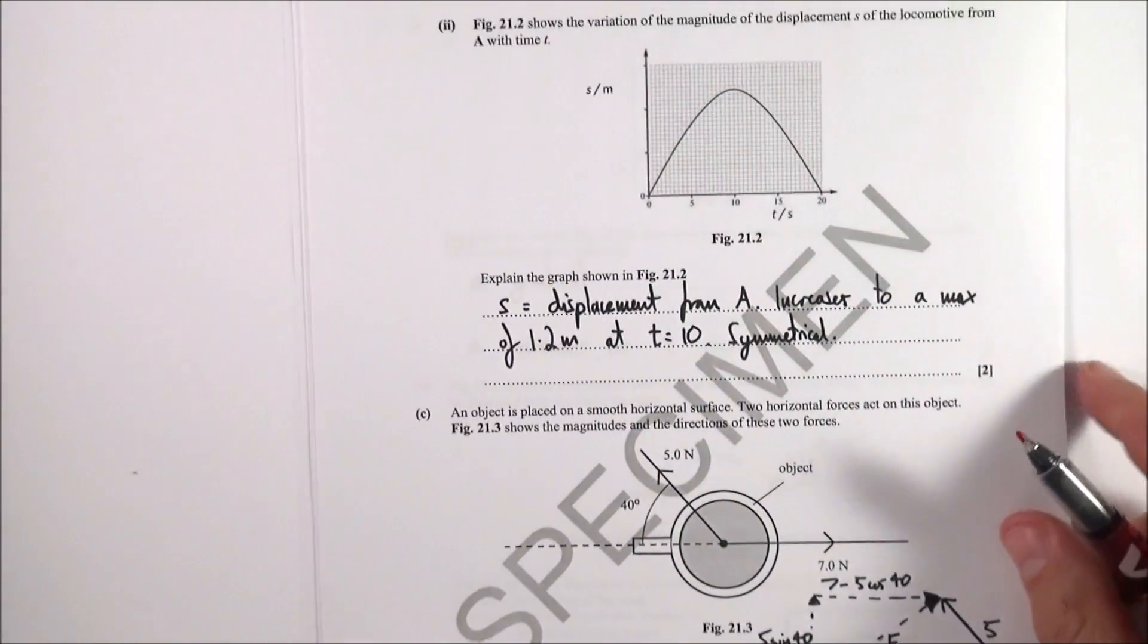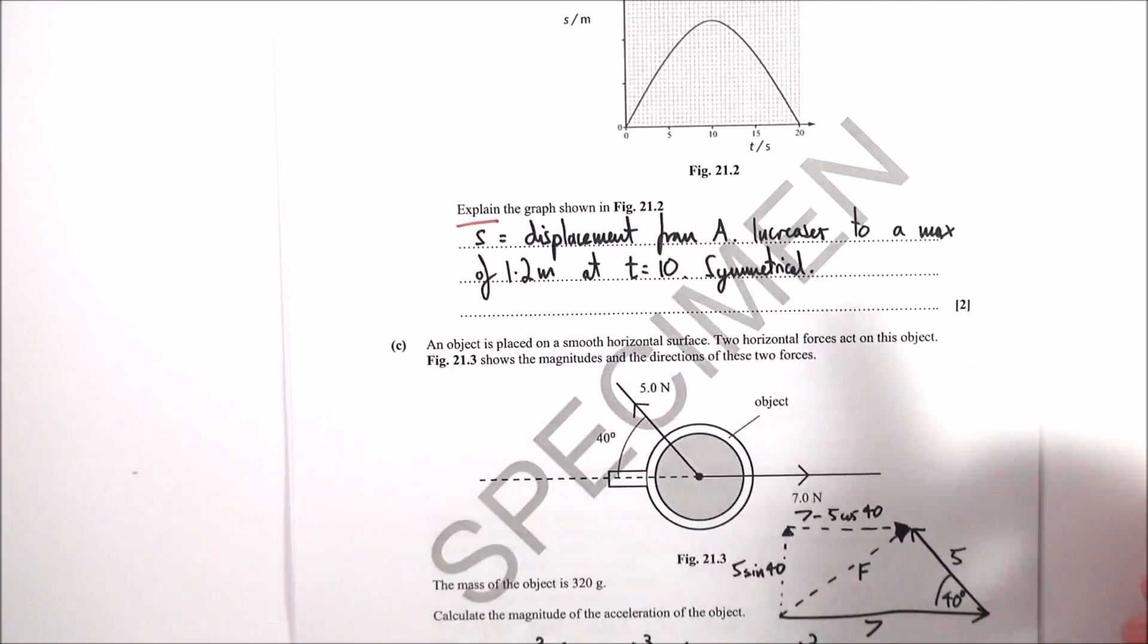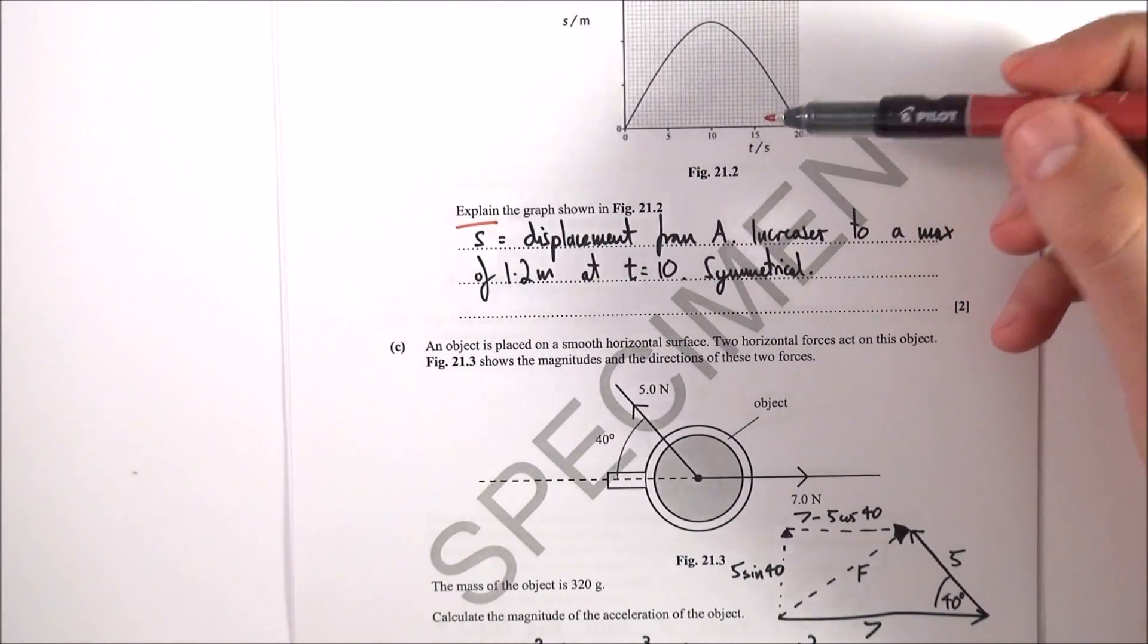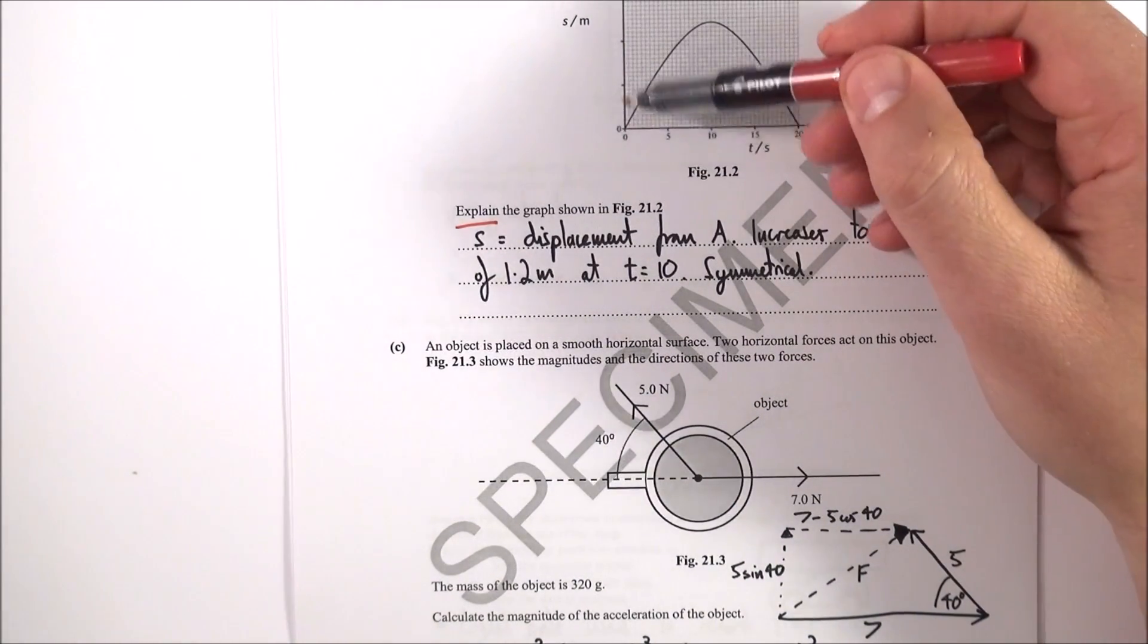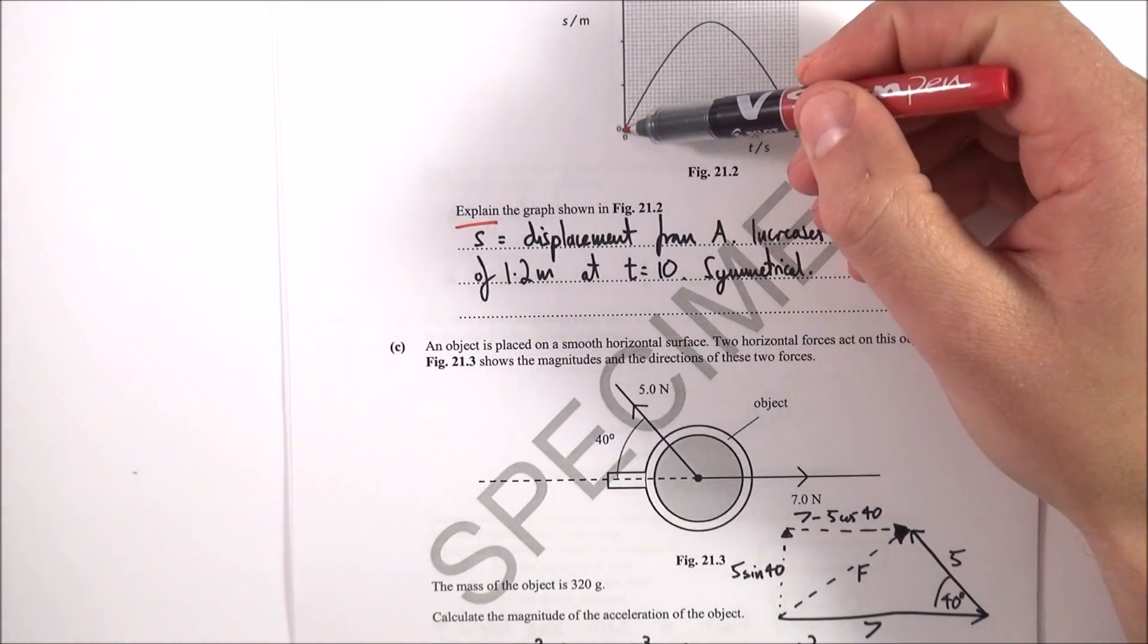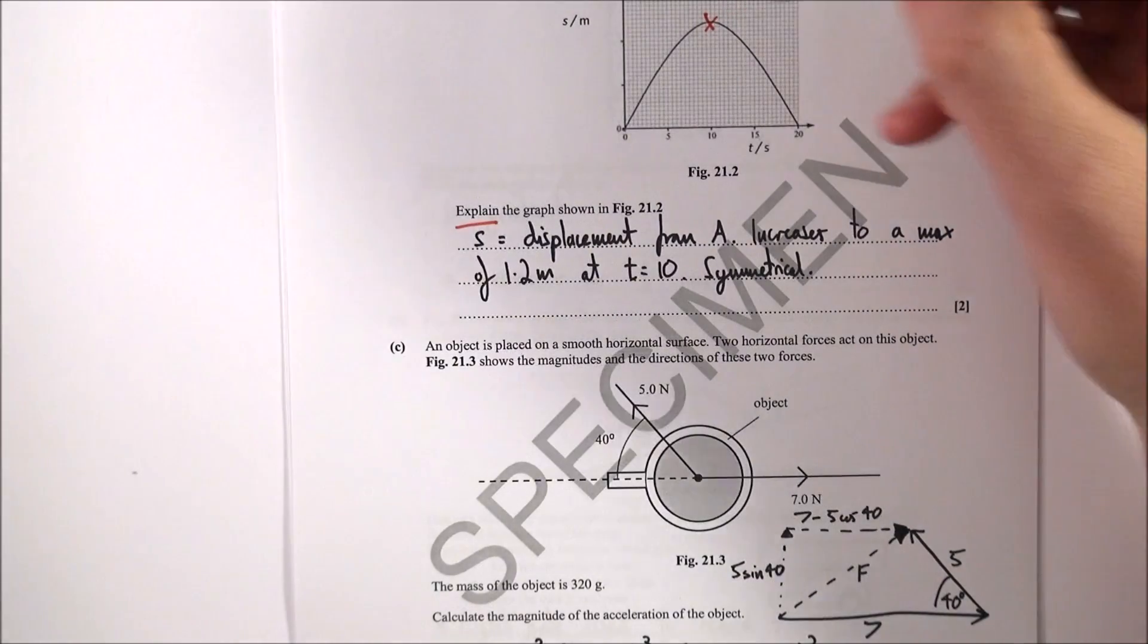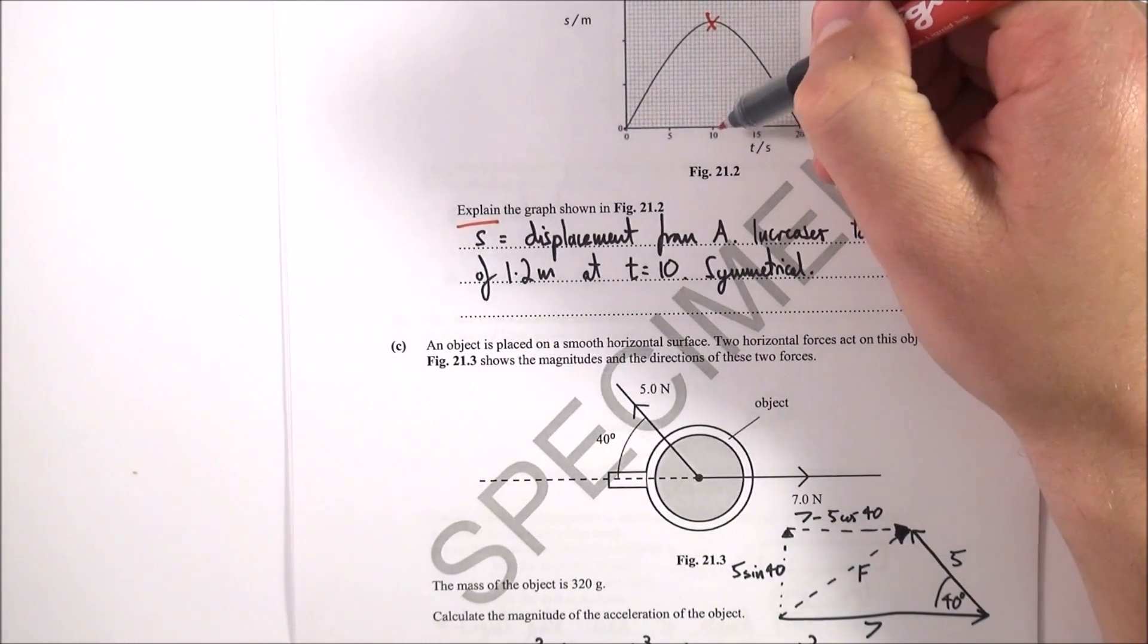The next one, the key word is really explain the graph shown here. Basically what we have is a graph of the displacement from position A, and therefore it increases from 0 up to a maximum of 1.2 after 10 seconds. This is because the radius of 0.6, or the diameter when it goes from A to C must be 1.2 meters.